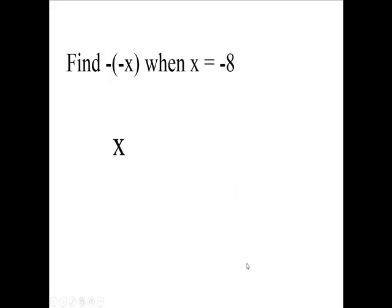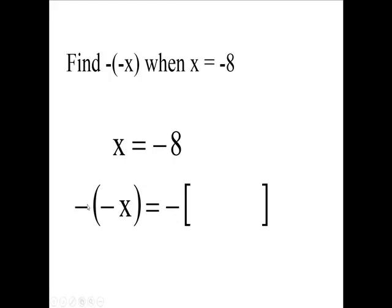Now, the opposite of the opposite of x when x is negative. We have this sign and then a bracket for all this. Inside the parentheses, this sign gets copied, the parentheses becomes a bracket, and inside is the opposite of x. You plug x in. Now, how many negatives do you have? One, two, three. Three negatives make a negative answer.